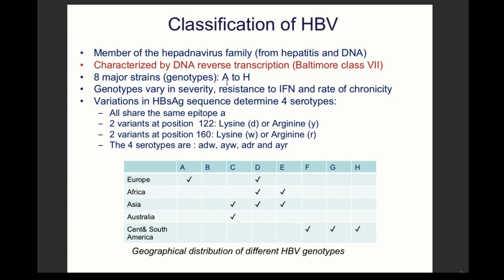Hepatitis B has eight strains from A to H, differing in resistance to interferon and rate of chronicity. They all share the same epitope A in the surface antigen, with variation at positions 21/22 (lysine or arginine) and position 160, giving four different serotypes: ADW, AYW, ADR, and AYR.